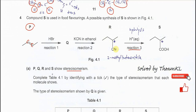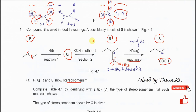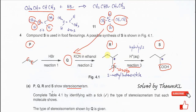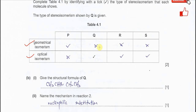Compound R undergoes hydrolysis in reaction 3. The nitrile group's C≡N triple bond breaks — the nitrogen forms ammonia and the carbon forms a carboxylic acid (–COOH). So Q, R, and S all show optical isomerism. For geometrical isomerism (cis-trans), only P shows it. For optical isomerism, only Q, R, and S show it — P does not.